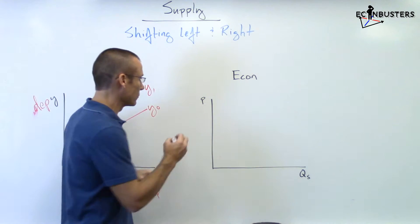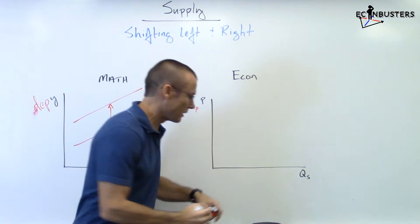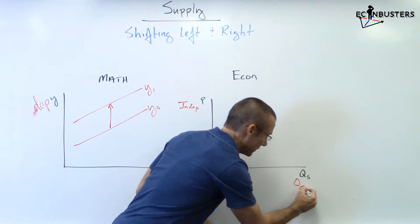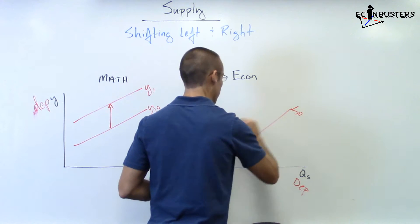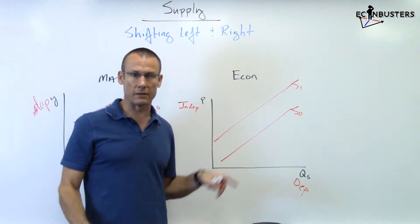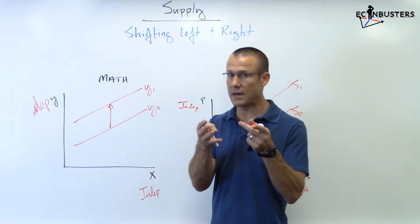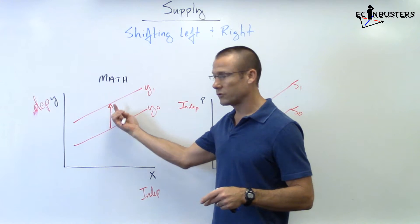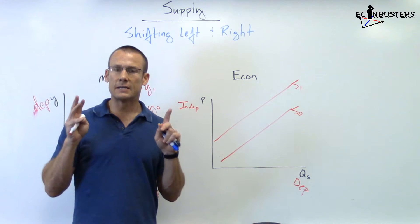the dependent. And let's say you see the following two graphs: s sub zero, s sub one. And you're asked what happened to supply? Now remember, look over here - y sub zero, y sub one - supply, y increased in the math class. Absolutely right, curve shifted up. What happened here? What did supply do? Did it increase? Did it decrease?